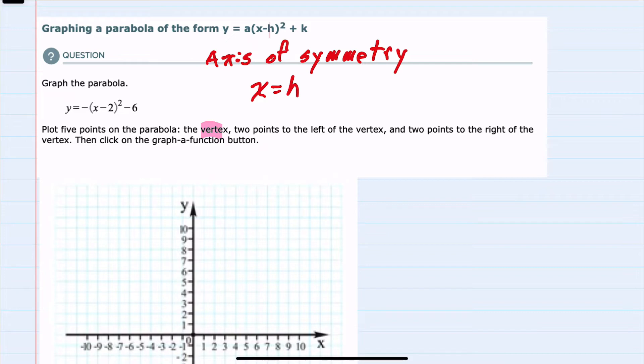And since we have this form we can see that the h is the number being subtracted from x inside the parentheses. So here it is a two that is being subtracted from x inside the parentheses.